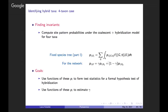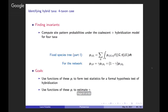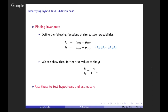We identify two polynomials F1 and F2 in the site pattern frequencies, where X and Y denote same or different nucleotides. F2 is the relationship on which the ABBA-BABA test is based. For the true values of the site pattern probabilities, the ratio F1/F2 equals gamma/(1-gamma), which can be used to formulate hypothesis tests and to estimate gamma. We consider all possible assignments of three in-group taxa to parent 1, hybrid, and parent 2, testing all quartets with a multiple comparison correction.